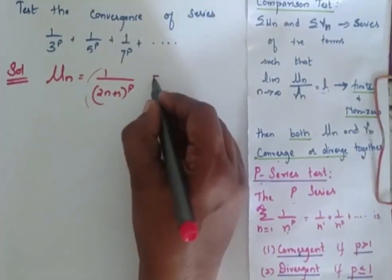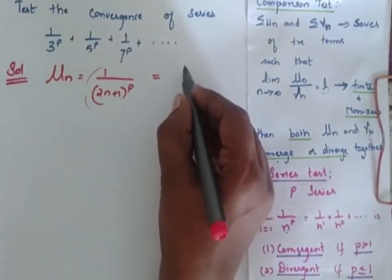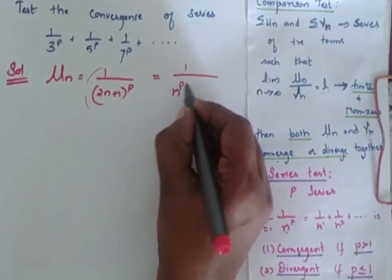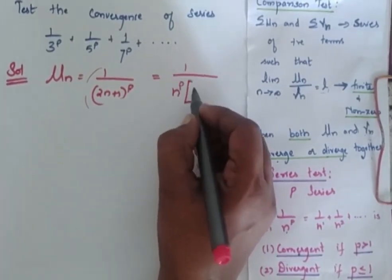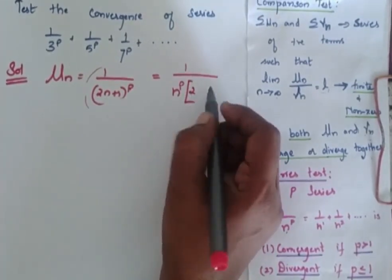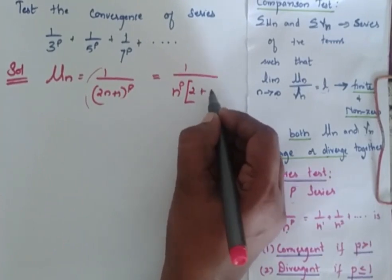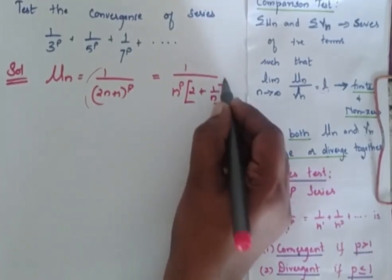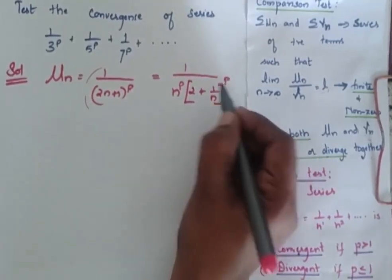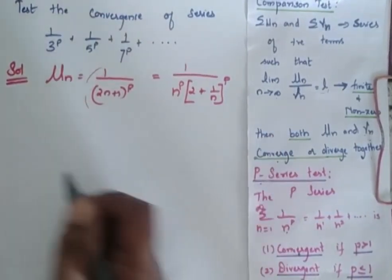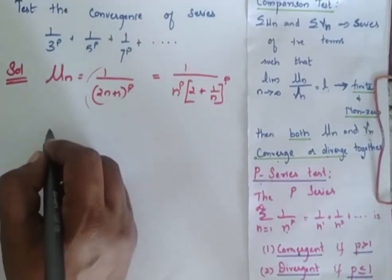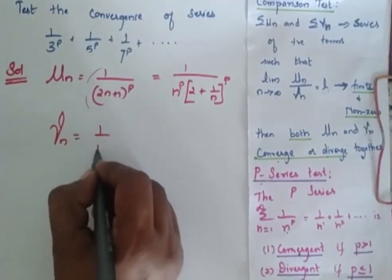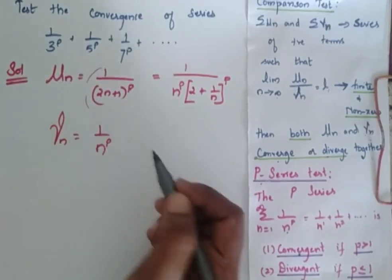Now I am going to take N power P commonly outside. When I take N power P commonly outside I will get 1 over N power P times (2 plus 1 by N) to the power P. So now I consider my VN is equal to 1 by N power P.